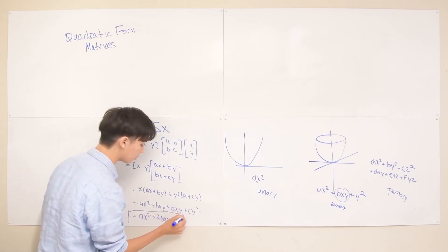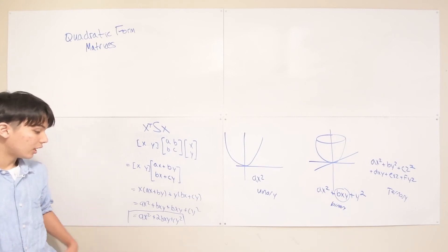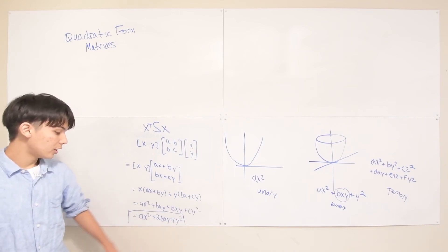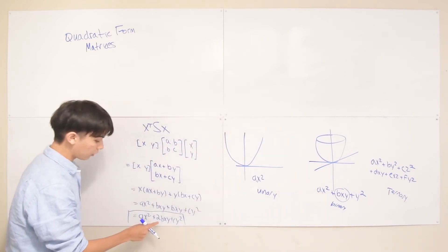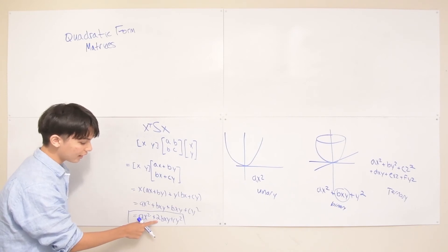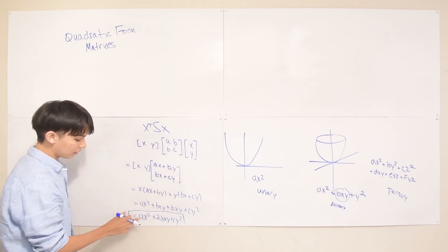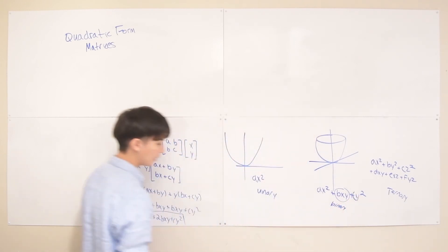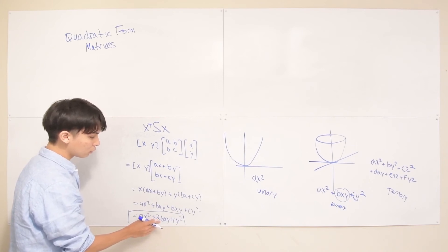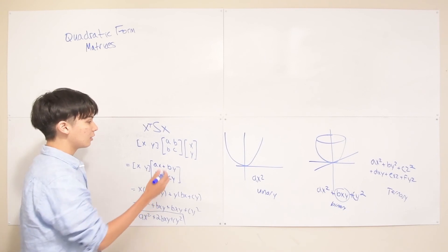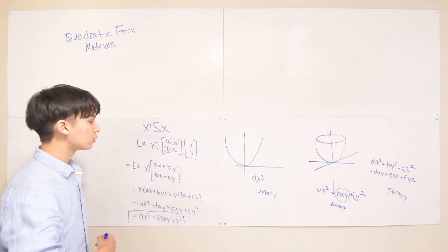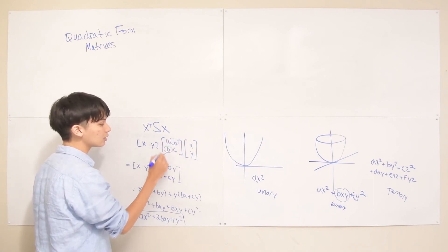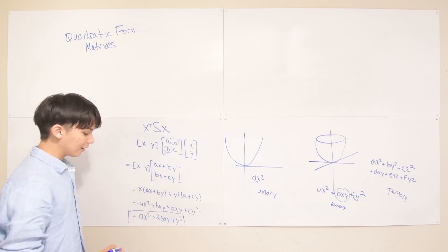That's our final polynomial, which is clearly a binary quadratic form — three terms, each with degree 2. The only difference from what we wrote before is that we have a 2 in the middle term. You can see that a and c worked out directly from the diagonal, but the middle coefficient b gets duplicated. In general, all the coefficients that are off the diagonal in the symmetric matrix S will be duplicated in the resulting equation.